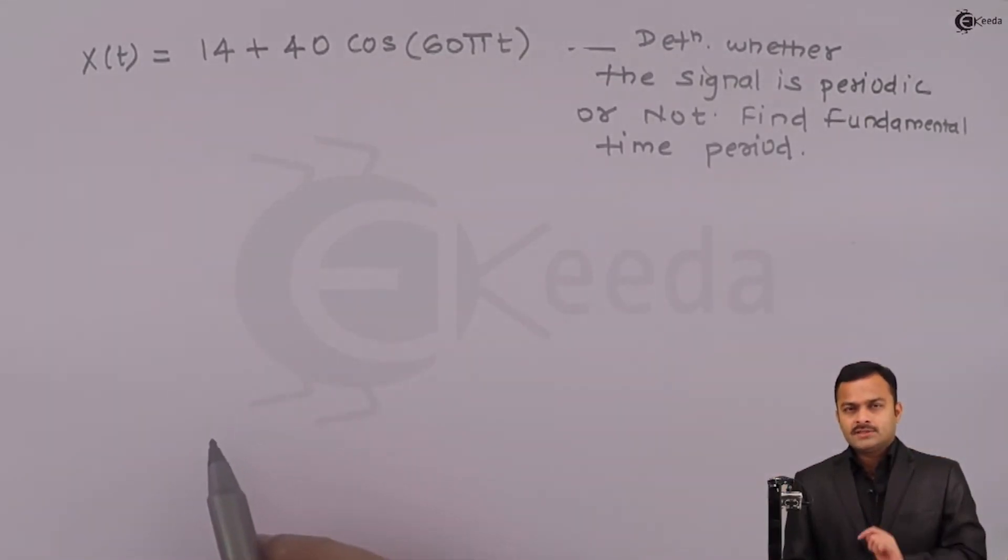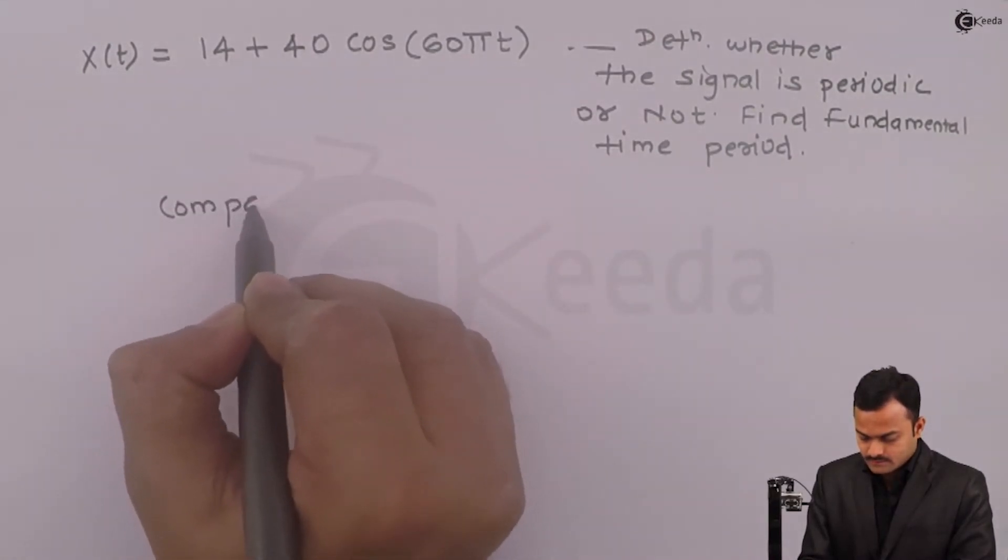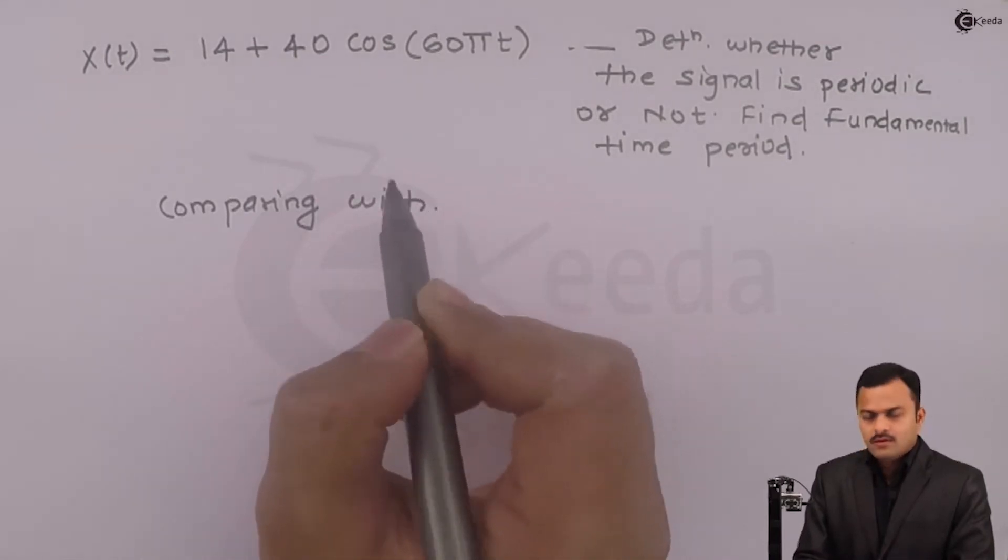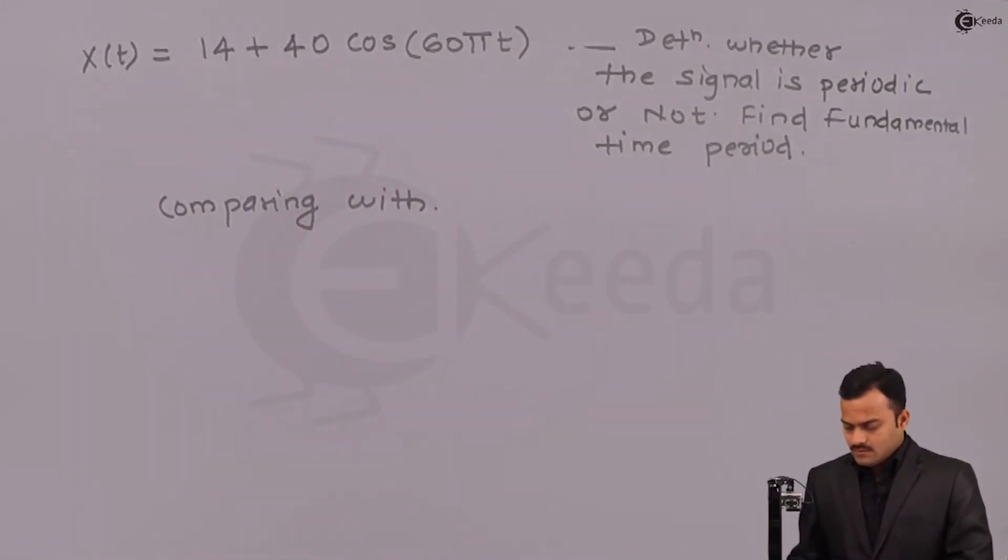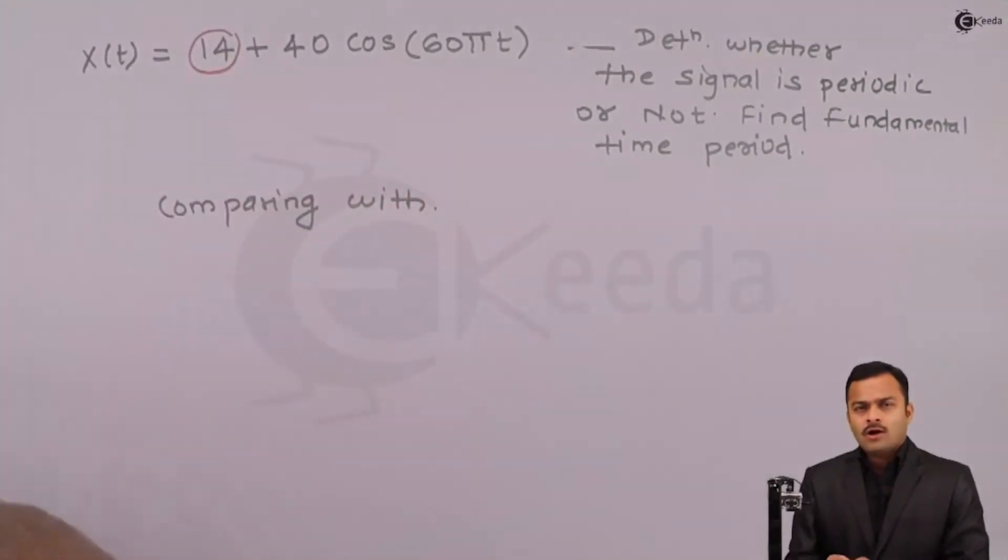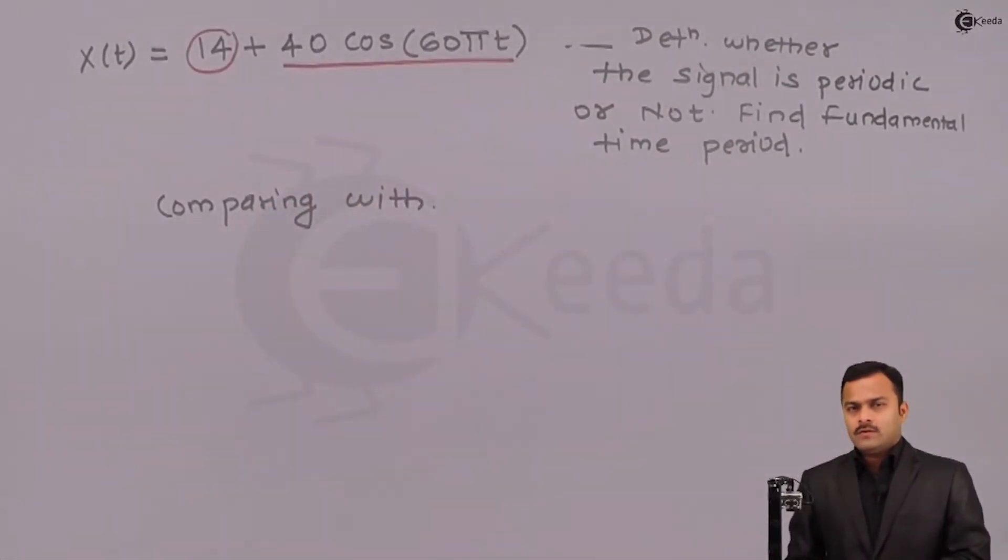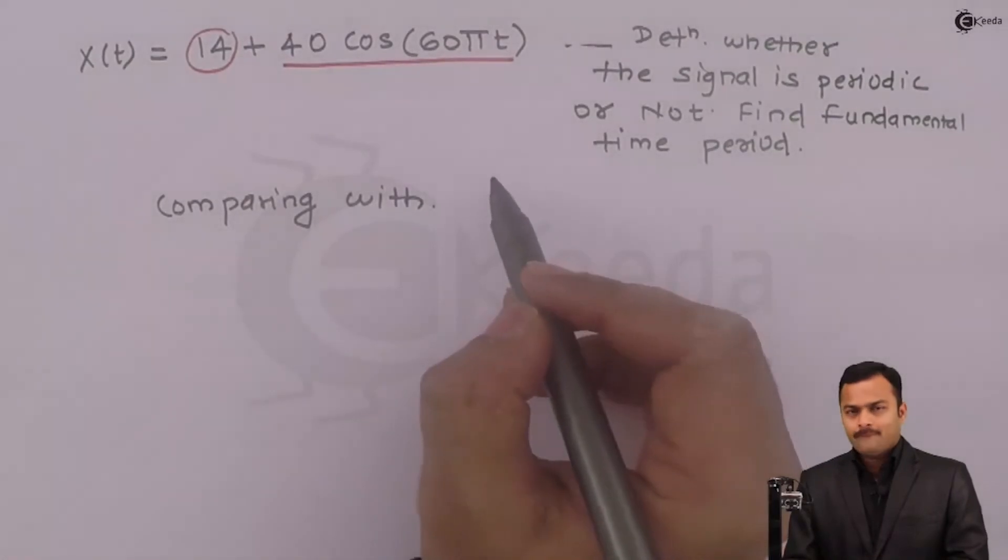It's a standard procedure to solve this kind of numericals. So what we'll do first, we'll compare with the standard equation. Now here, this 14 is not playing any role as far as periodicity is concerned, hence the signal which is of paramount importance is this. Always remember, we have to compare the trigonometric terms sine and cosine.